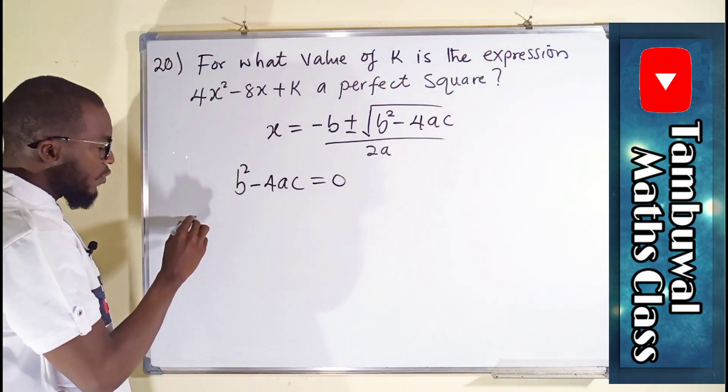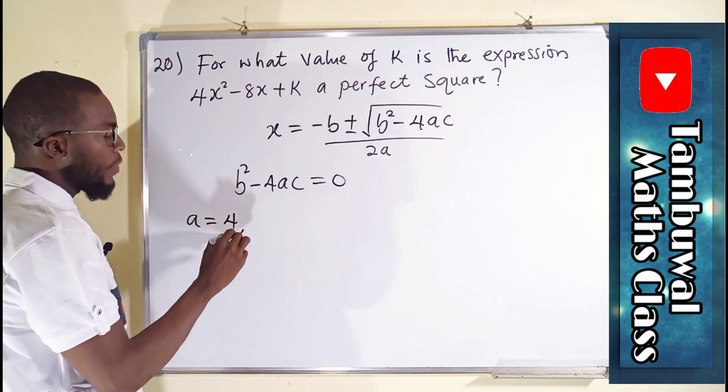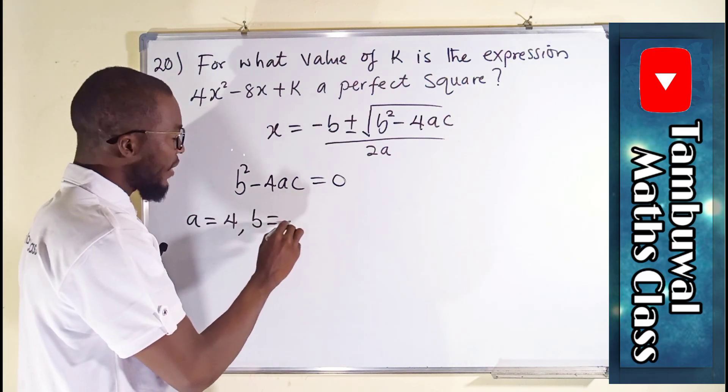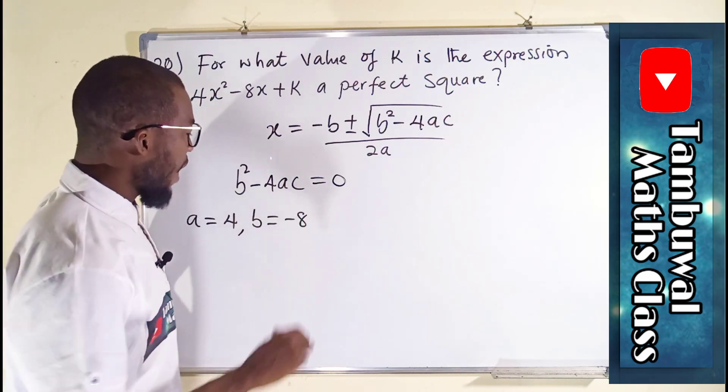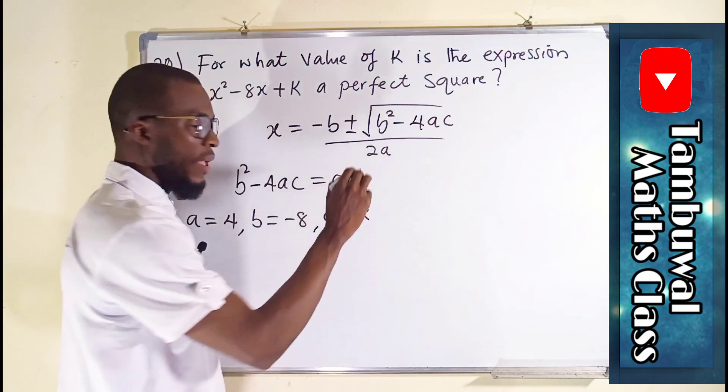Now you can see the leading coefficient is always a. We have it as 4. b is the coefficient of the middle term, which we have as minus 8. And the constant, which is c, equals k.